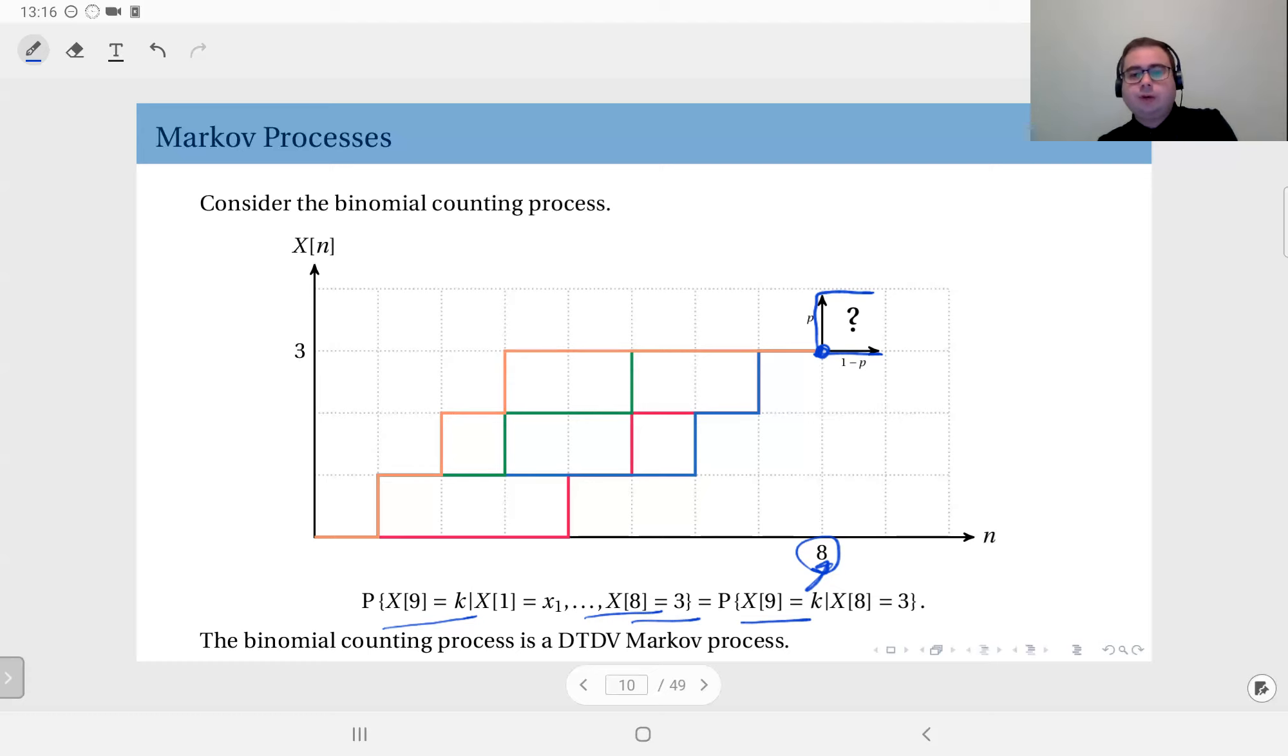So this is the Markov property and hence the binomial counting process is a discrete time discrete valued Markov process.